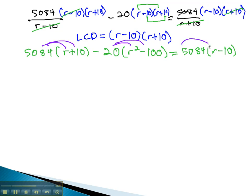We continue solving by distributing through the parentheses to get 5084 times r plus 50840 minus 20r squared minus 5084 times r minus 50840.